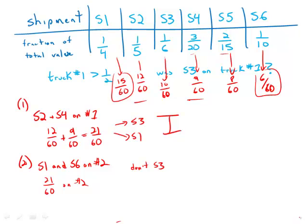Well then what we'd have on truck one would be the 12 over 60, the 9 over 60, and the 8 over 60. And we add those three up, what we get is 29 over 60, which is less than one half. And that's simply not going to work.